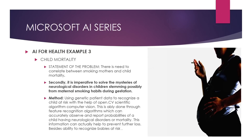The third example focuses on child mortality. The problem is the need to correlate between smoking and child mortality, and to solve the mysteries of neurological disorders in children stemming from maternal smoking habits during gestation. The method involves using genetic patient data to recognize children at risk, with the help of OpenCV — a scientific algorithm that aids computer vision. Feature recognition algorithms can accurately observe and report probabilities of a child having neurological disorders or mortality, helping to prevent further loss and recognize babies at risk.